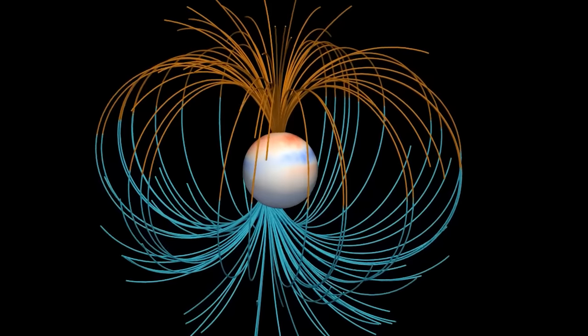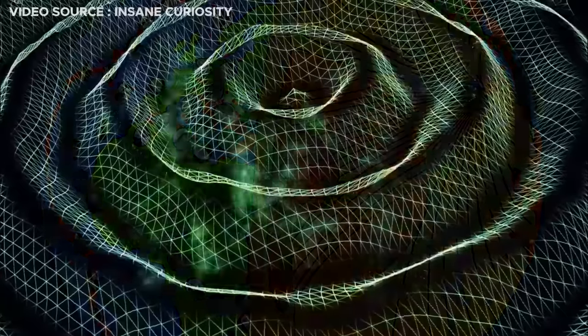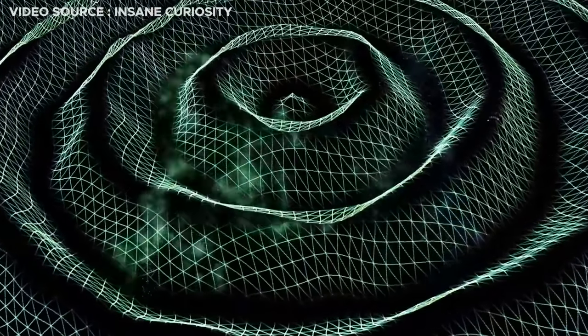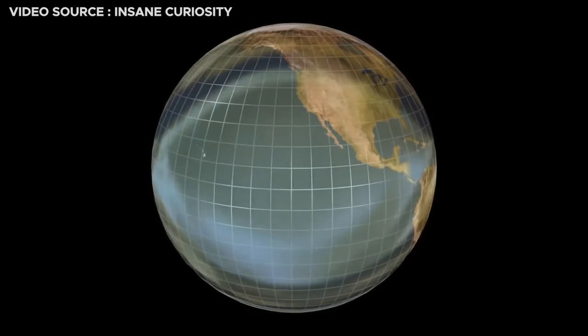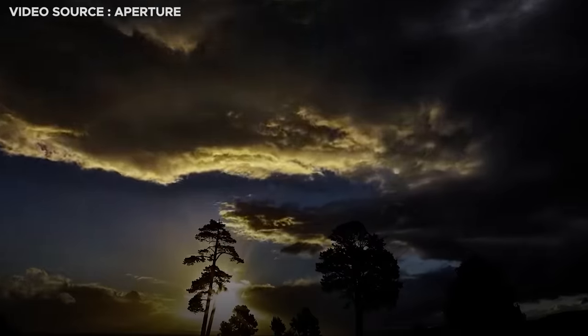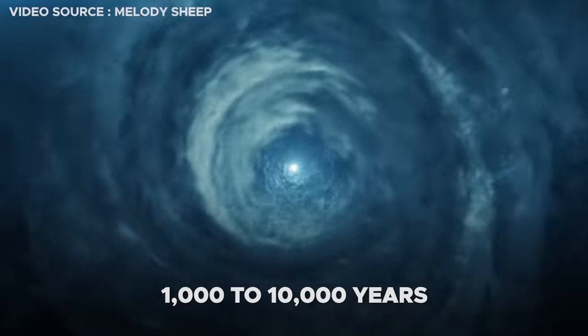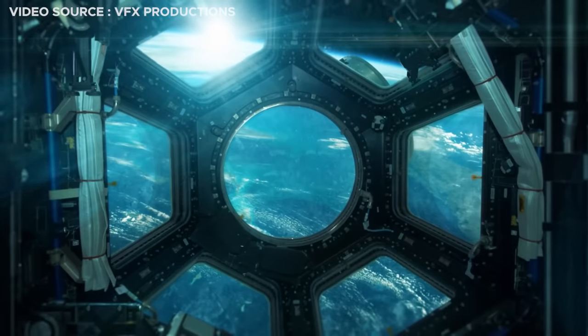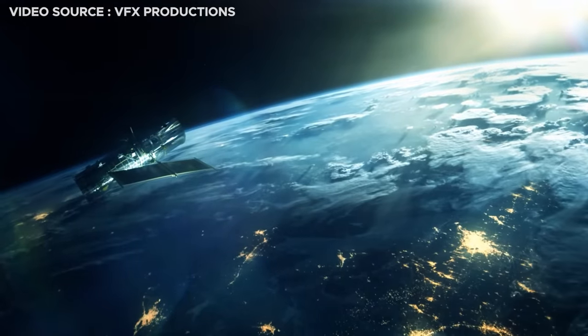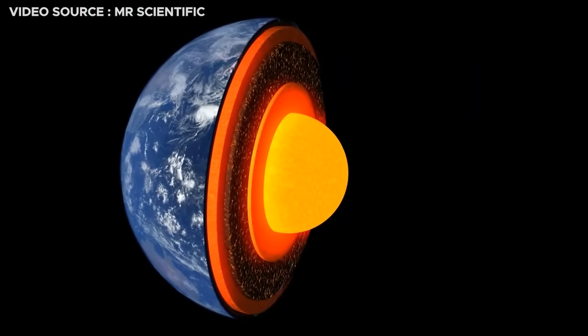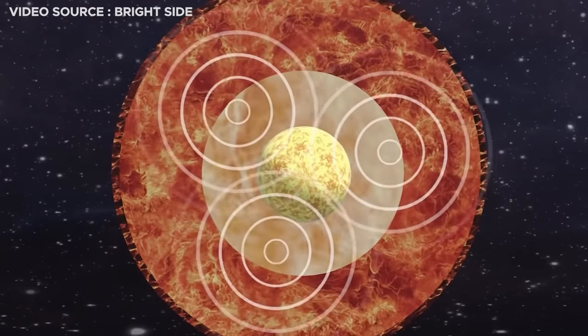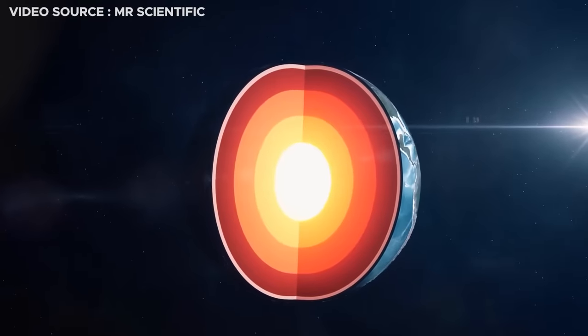But geomagnetic reversals are not abrupt events; they are gradual processes that unfold over thousands of years. The duration of these reversals can vary significantly, typically spanning from 1,000 to 10,000 years. The reasons for this variability are intricate and not entirely understood. However, it is believed that diverse conditions in the outer core, such as variations in temperature, composition, and flow patterns, play a significant role.